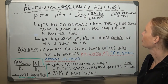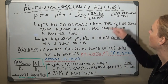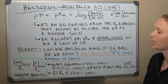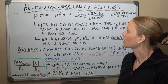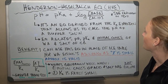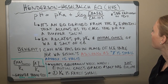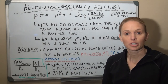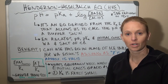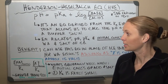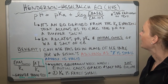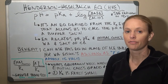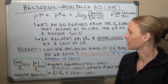The Henderson-Hasselbalch equation, commonly abbreviated as HHE, is an equation derived from the equilibrium expression for an acid dissociating. It allows us to calculate the pH of a buffer system.